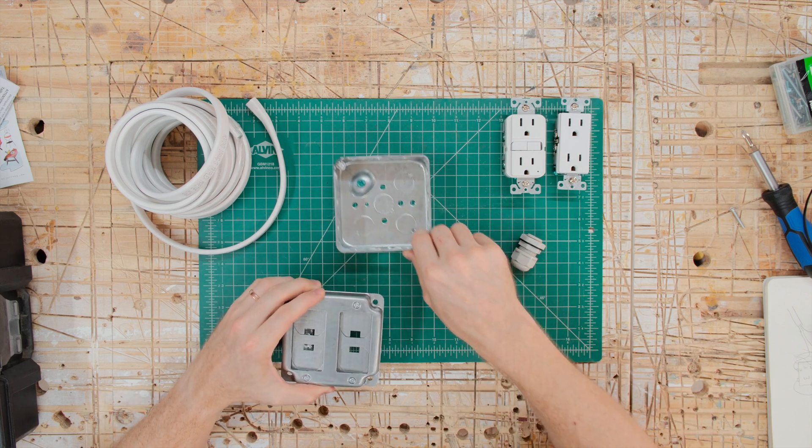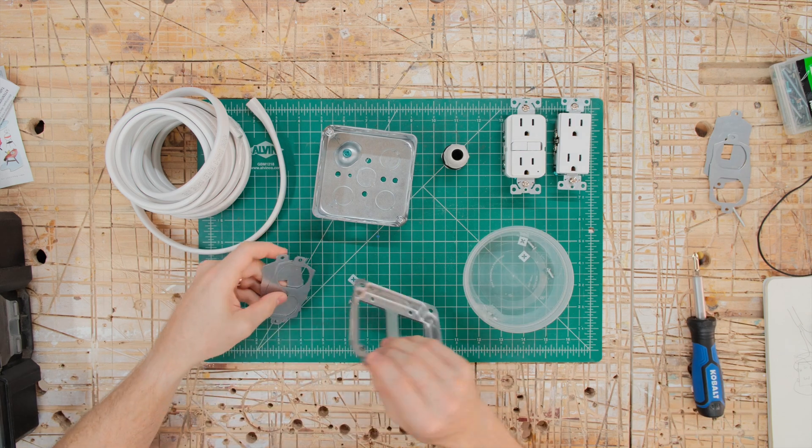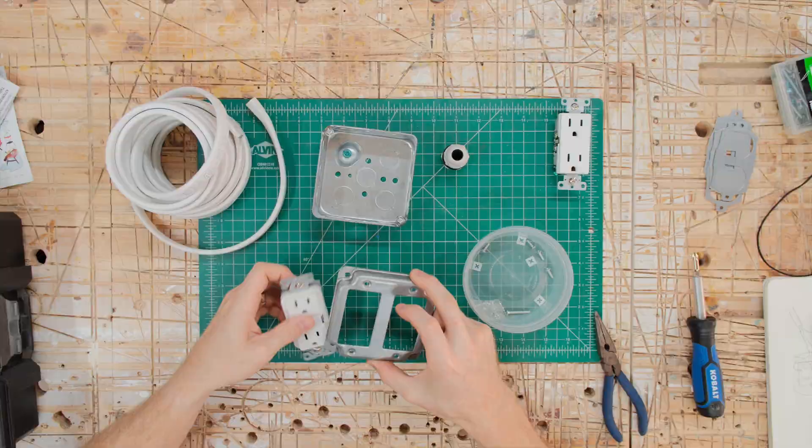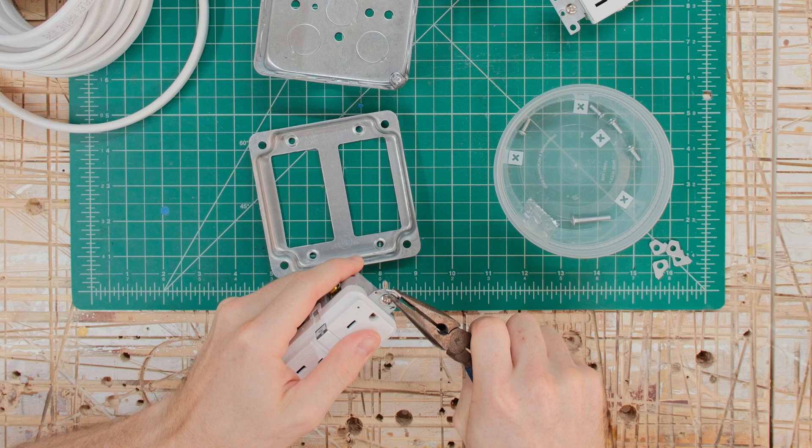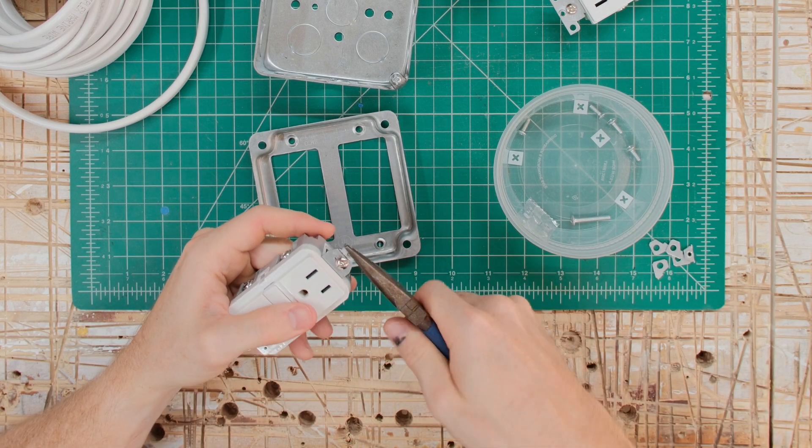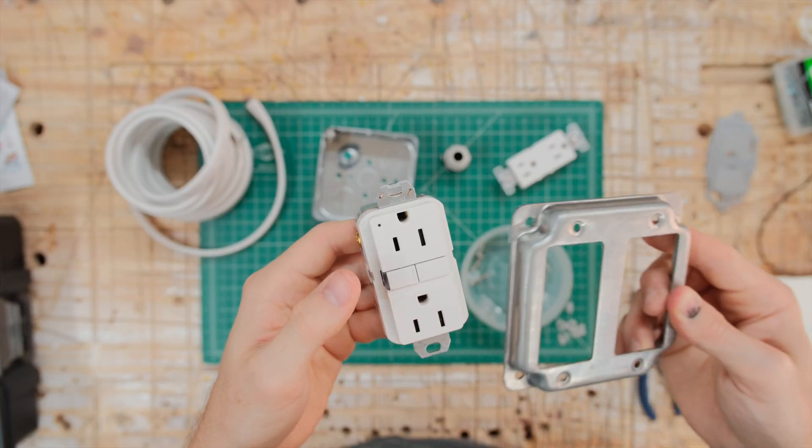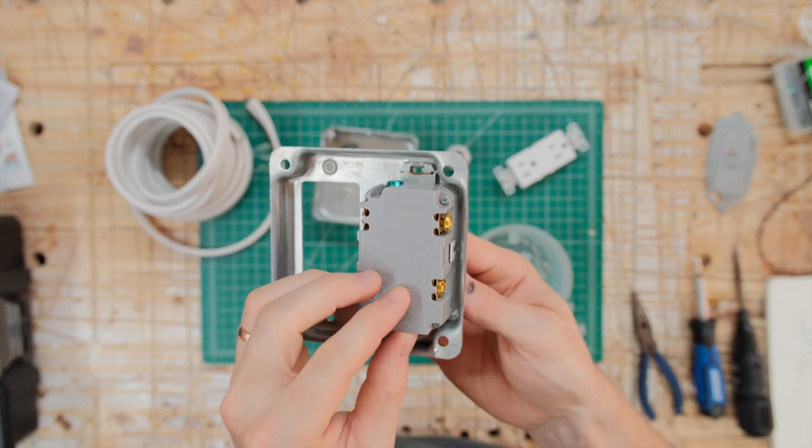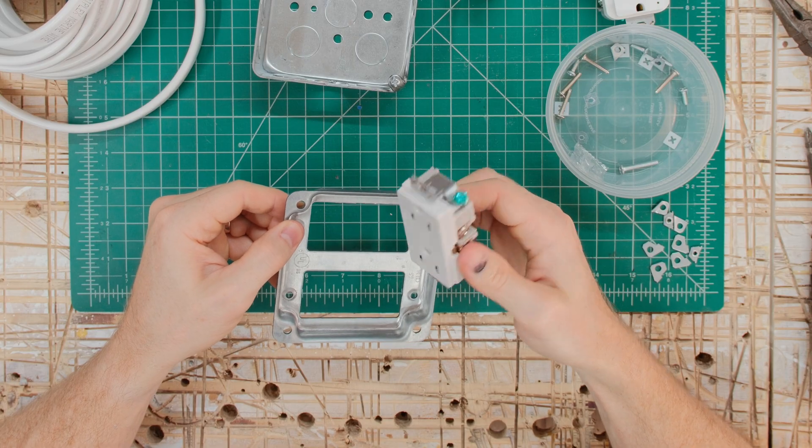With this type of outlet box, the receptacles attach to the cover plate with a small nut and bolt rather than attaching to the box itself. In order for them to fit into the back of the cover plate, you have to break off the ears or mounting tabs at the top of the receptacle. You can do this by bending them back and forth with a small pair of pliers. But make sure you buy outlets where these tabs are already punched out to break off easily. Once they are off, the receptacle can fit into the cover plate like this. We don't need to bolt it on yet, just make sure it fits. Repeat this for the second outlet.